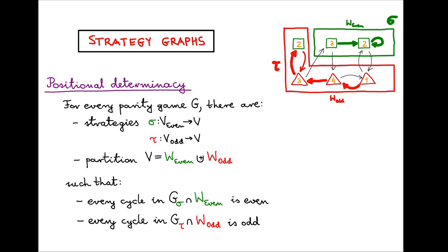In order to uncover the basic structure of winning sets or winning strategies in parity games, which is the attractor decomposition, let's recall the concept of a strategy graph of a positional strategy in a parity game. Positional strategies are strategies that can be uniquely described by a set of edges that go out of vertices owned by the respective player, either even or odd.